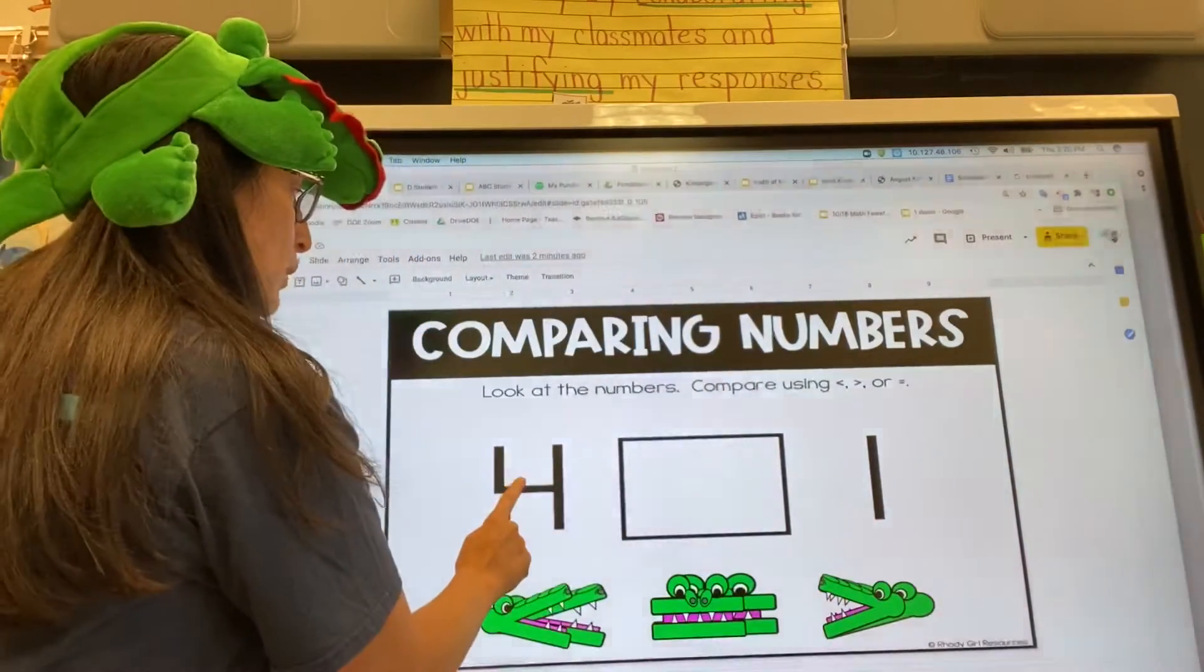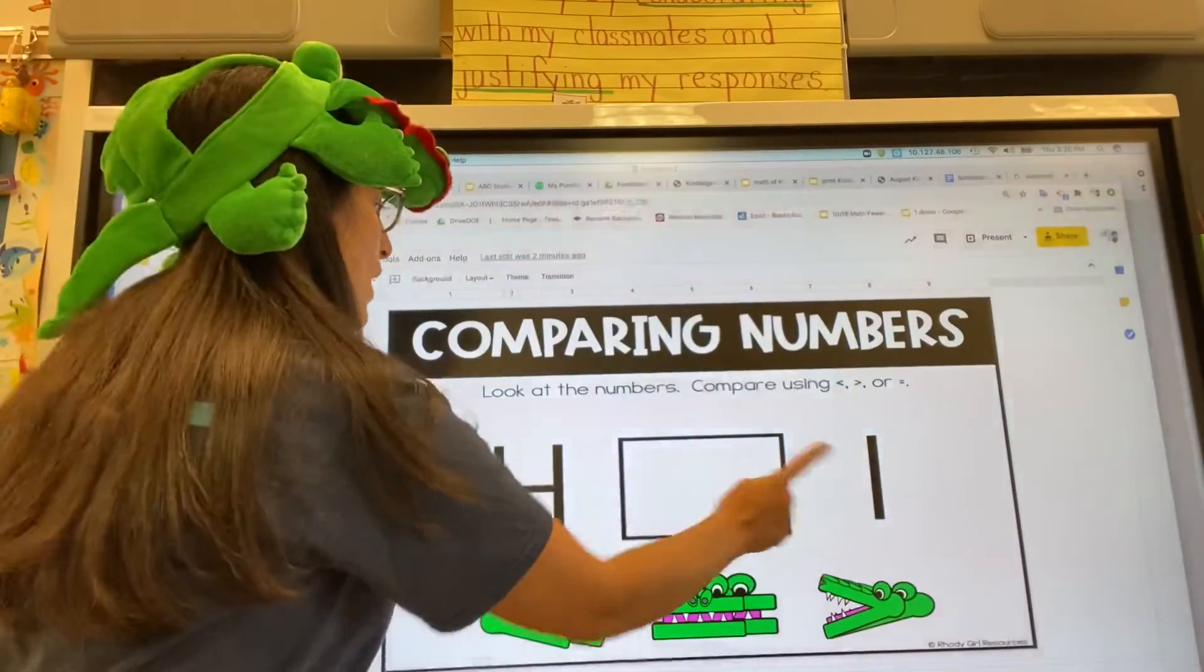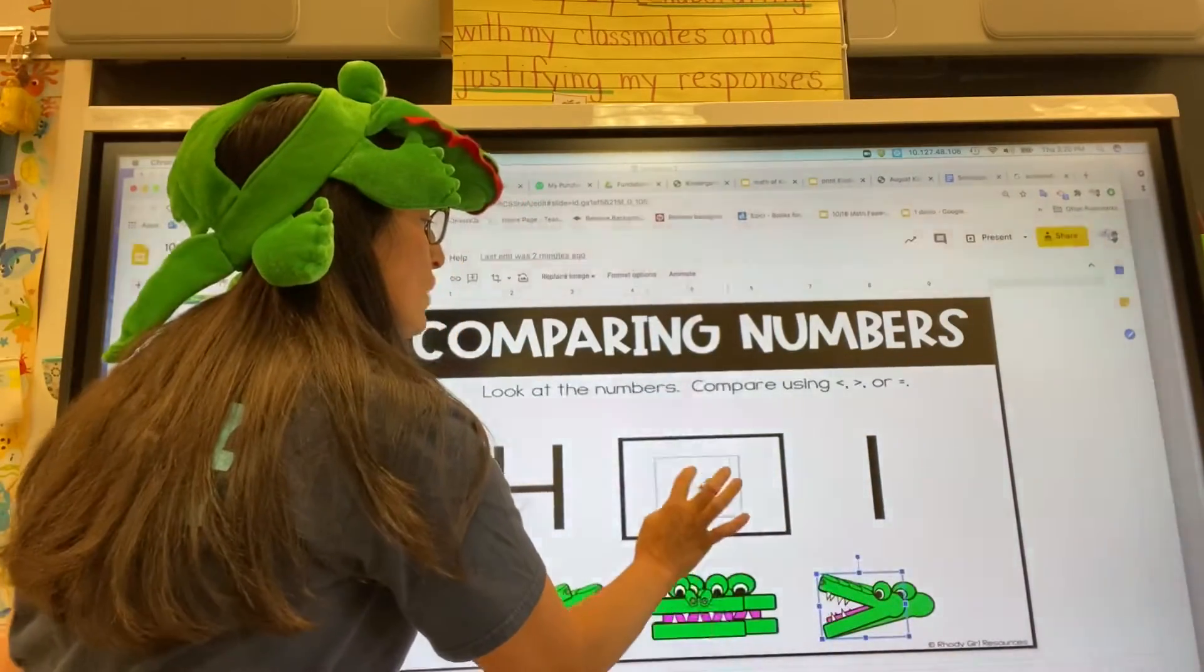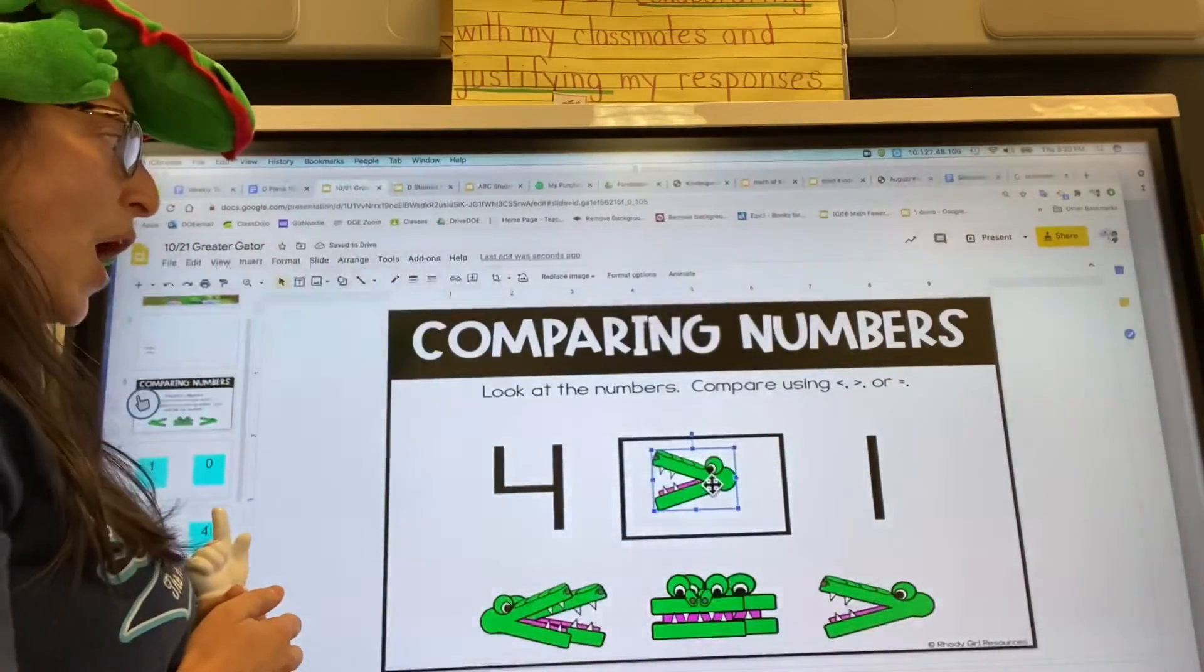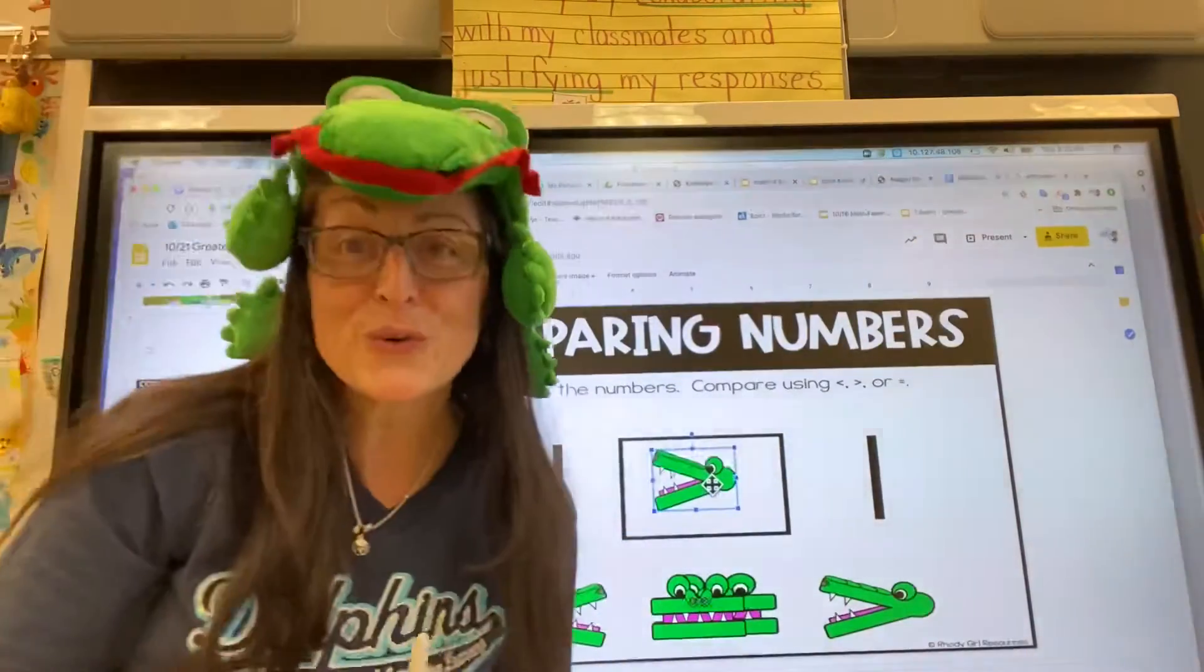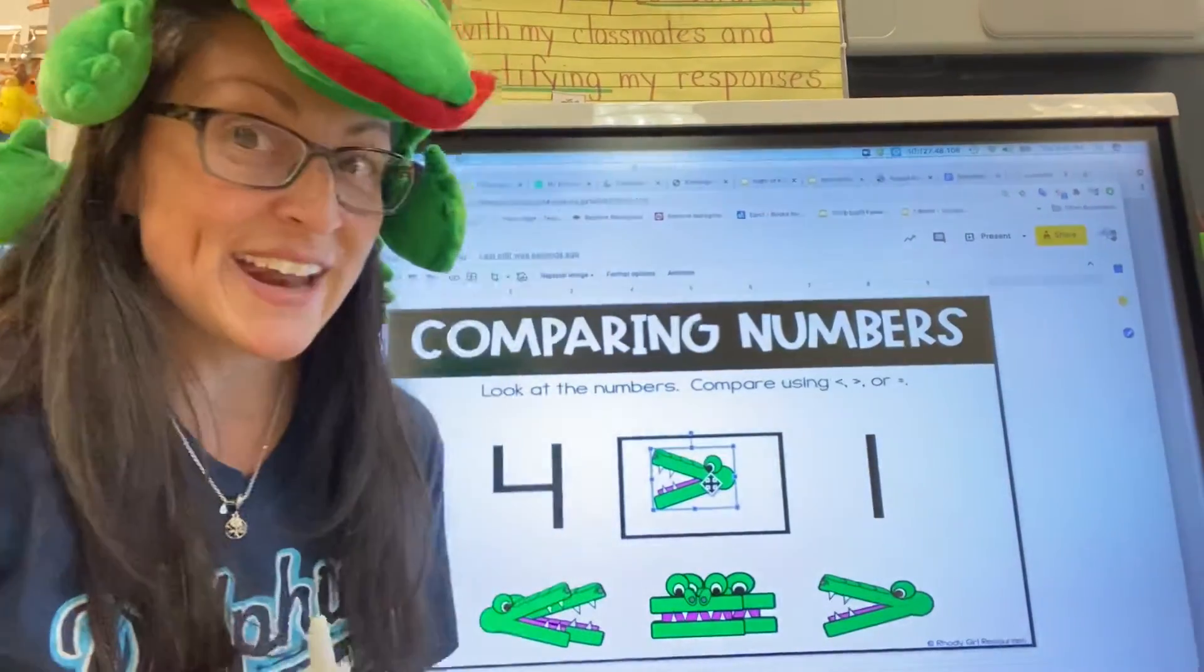So I'm looking at the four and the one. I think he's going to eat the four. So I'm going to drag over the gator that will eat the number four. You're going to do a great job. Go ahead and try it.